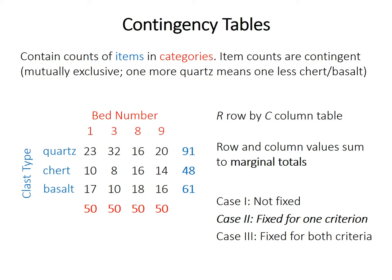The data will come in the form of a contingency table, which contains counts of items in the rows, across different categories or samples in the columns. The item counts are contingent, meaning they're mutually exclusive. In this example, one additional quartz in a particular bed means one less chert or basalt, because there are only 50 in total. We often talk about R-by-C, or row-by-column, contingency tables — this example is a 3-by-4 table. The sum of values in each row gives a marginal total, and there are marginal totals for columns as well.